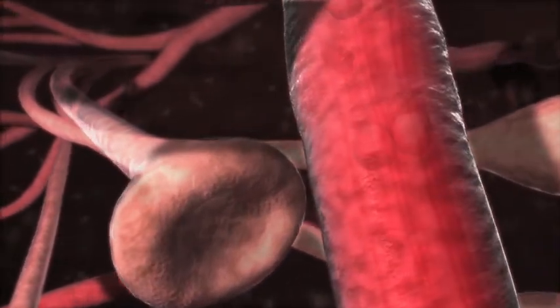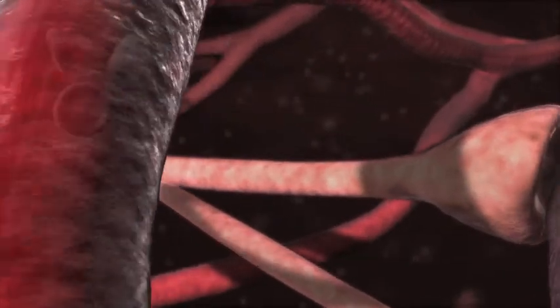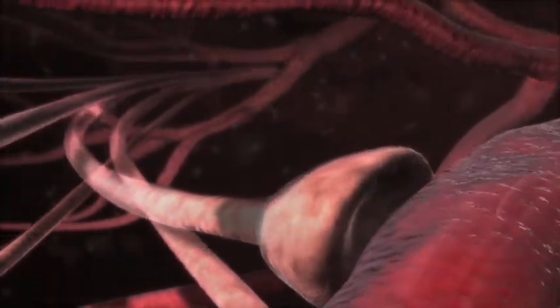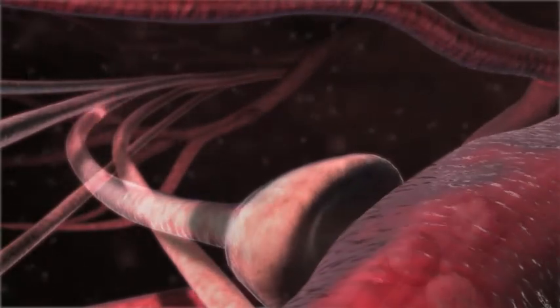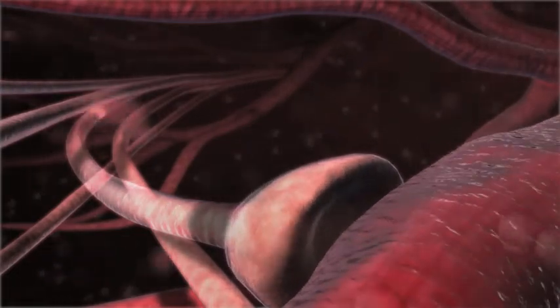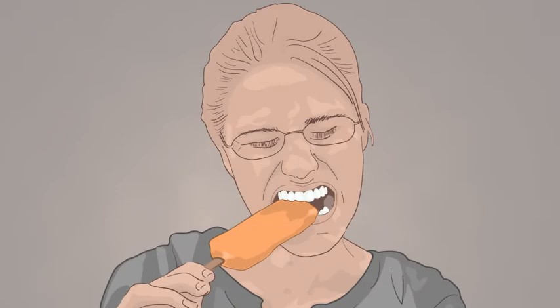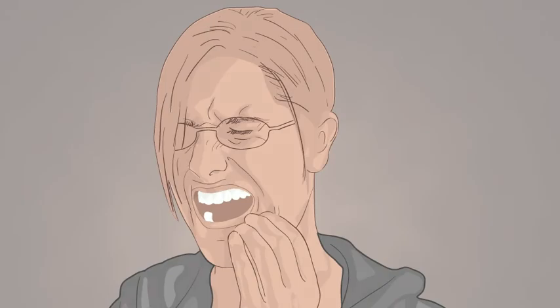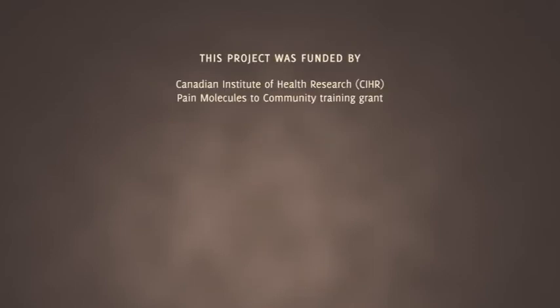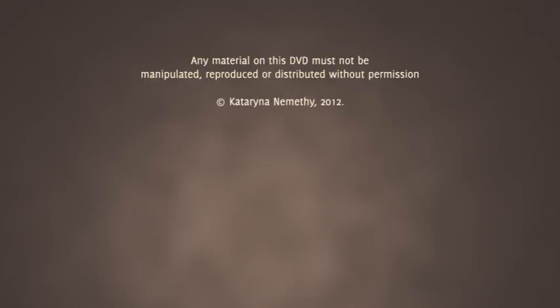This process of peripheral sensitization explains why sensitized nociceptors may become so sensitive that they can be activated by, for example, adjacent pulsing blood vessels, or mechanical, thermal, or chemical stimuli, accounting for the dull, throbbing pain often experienced during certain types of toothache. Or why a cold stimulus such as ice cream may produce exaggerated pain in an inflamed tooth.